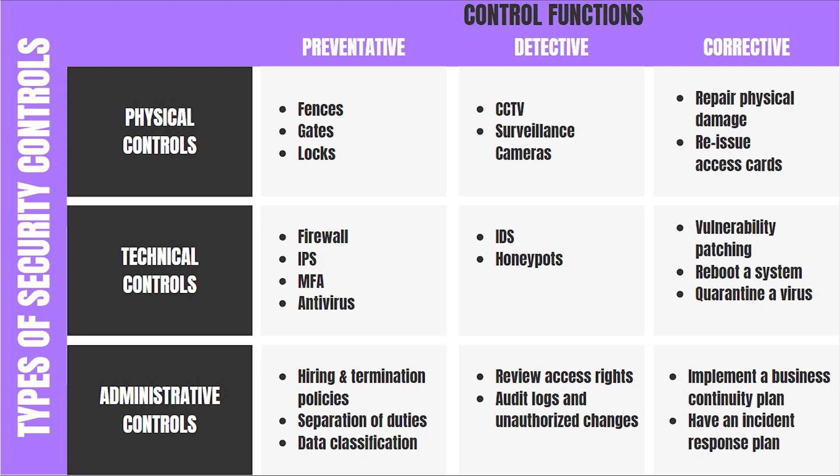Preventative controls are proactive measures placed to deter events from happening. Examples are separation of duties, passwords, and employee training and screening. Detective controls are measures that are implemented to detect errors and problems after they have occurred, like SIEM.